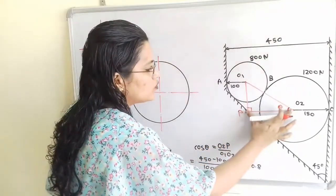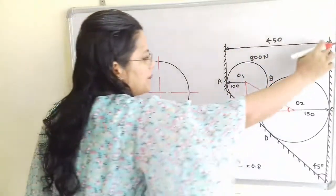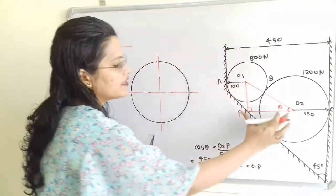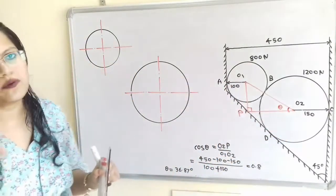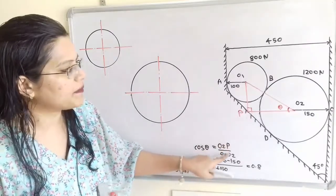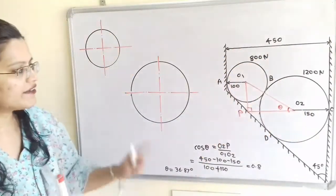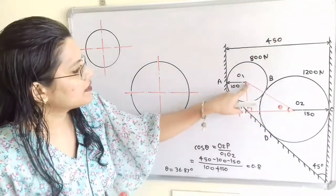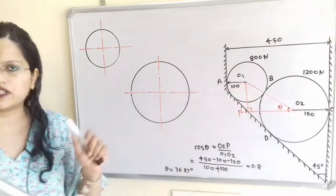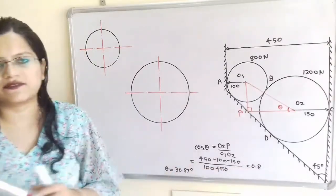To find O2P: the full distance is 450 mm. Subtracting O2C (150 mm) and O1A (100 mm) gives the remaining distance O2P. So cos(θ) = (450 − 100 − 150) / (100 + 150), since O1O2 is the sum of the two radii. This gives cos(θ) = 0.8, and therefore θ = 36.87 degrees.